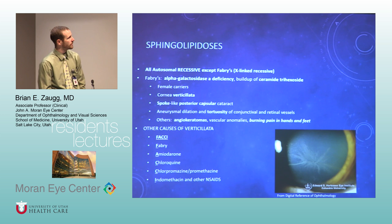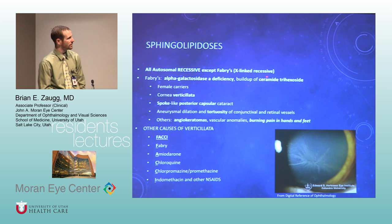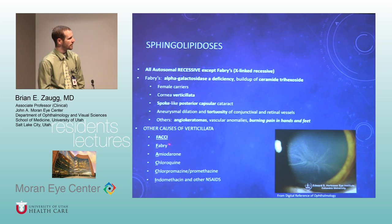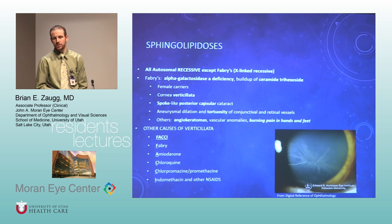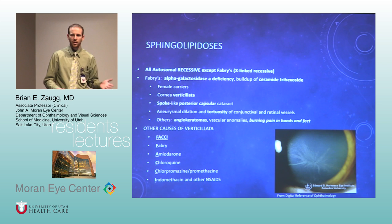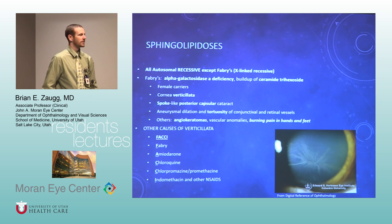Sphingolipidoses: all autosomal recessive, except Fabry's which is X-linked recessive. Fabry's is on the differential for whorl keratopathy with verticillata. Other things to think about are amiodarone, chloroquine, and indomethacin/NSAIDs. It's usually asymptomatic. I usually just lubricate these patients and don't recommend stopping their medications.